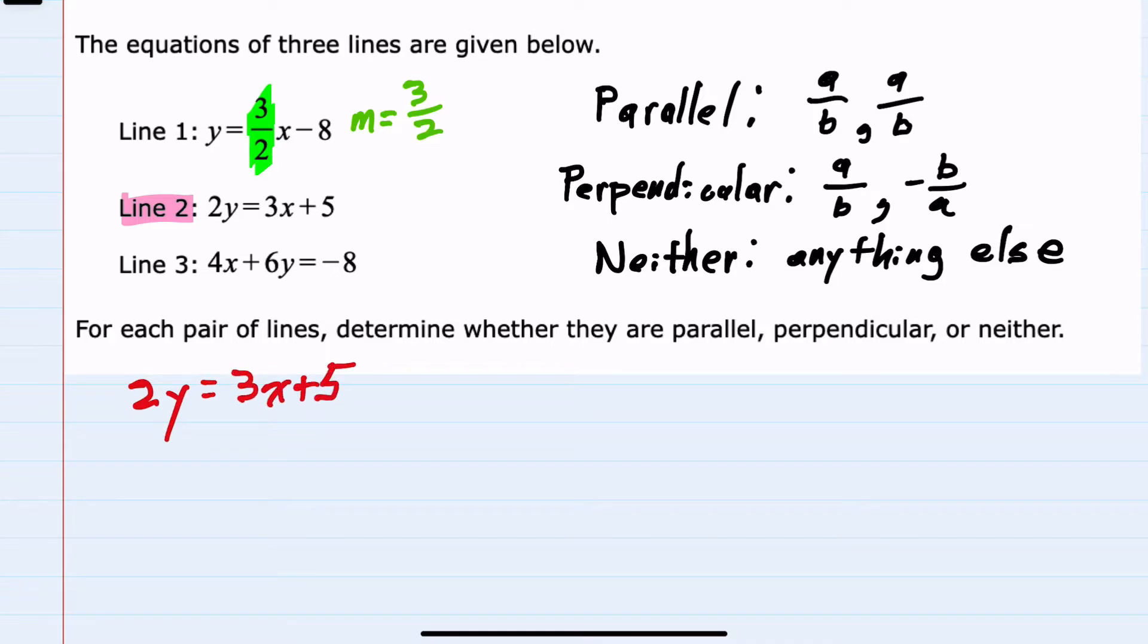If I'm solving for Y, I can divide both sides, each term on both sides, by two. This would give me Y equals 3 halves X plus 5 halves. So our slope here is 3 halves. I can already tell that it is parallel to line one, but I'll also need to look at line four.